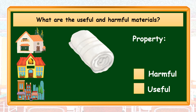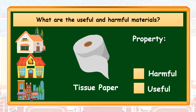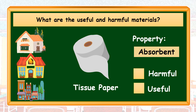What are the useful and harmful materials? The first material that we have is a face towel. The next material is a tissue paper. Same with a face towel, it also absorbs water and sweat. Based on its property, a tissue paper is a useful material because it is used to wipe dirt and to dry liquids as well.